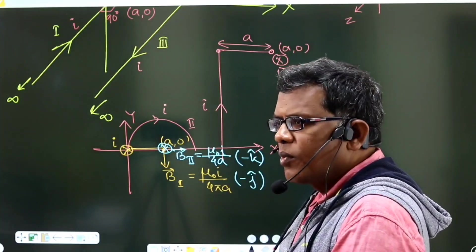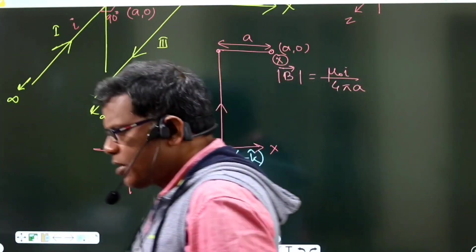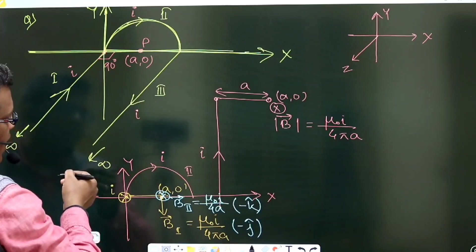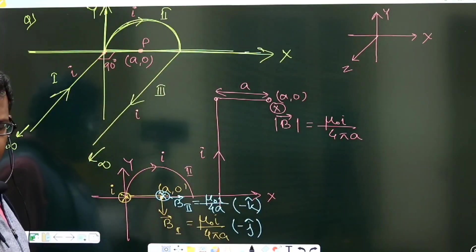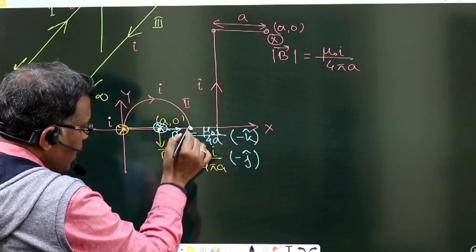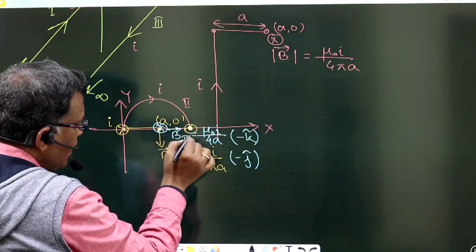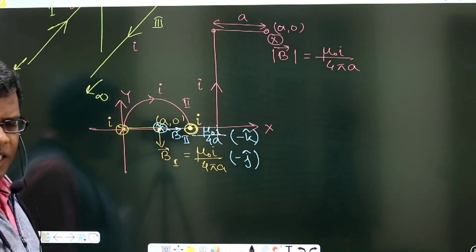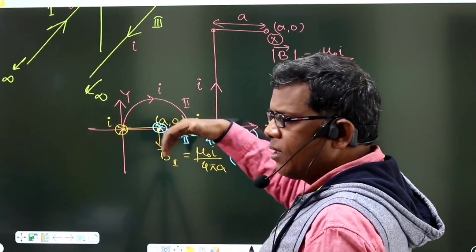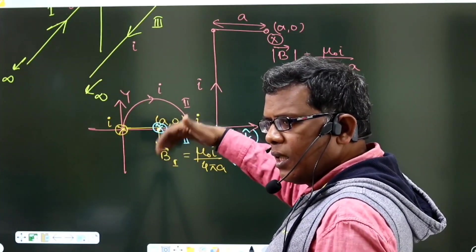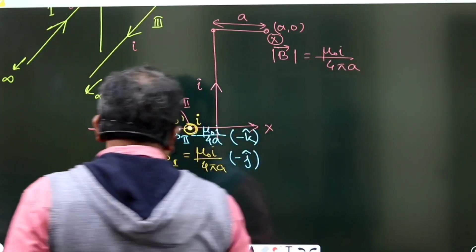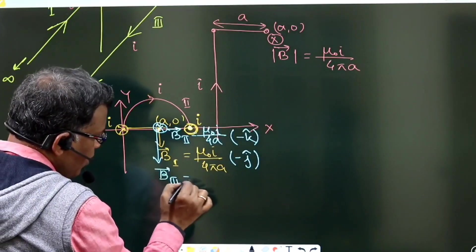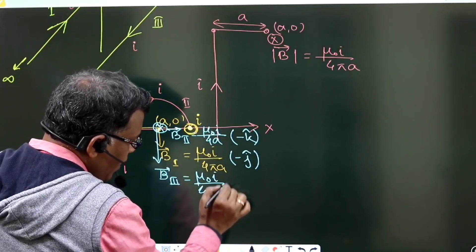We have found the magnetic field and direction for section 1 and section 2. Now for section 3: as shown in the original diagram, it is again an infinitely long wire parallel to the z-axis, with current coming outward from the xy plane. The third wire carries current i — the dot indicates it is coming outward. This part is semi-infinite like section 1. With current outward, by the right-hand thumb rule, the magnetic field will be downward again.